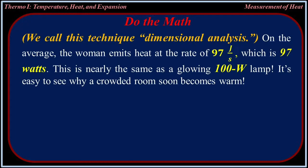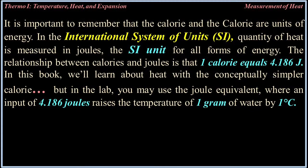The calorie and the Calorie (capital C) are units of energy. In the International System of Units (SI), quantity of heat is measured in joules. The relationship between calories and joules is that one calorie equals 4.186 joules. In this book, we'll learn about heat using the calorie, but in the lab you may use the joule equivalent — where an input of 4.186 joules raises the temperature of one gram of water one degree Celsius. The energy value in food is determined by burning the food and measuring the energy released as heat.